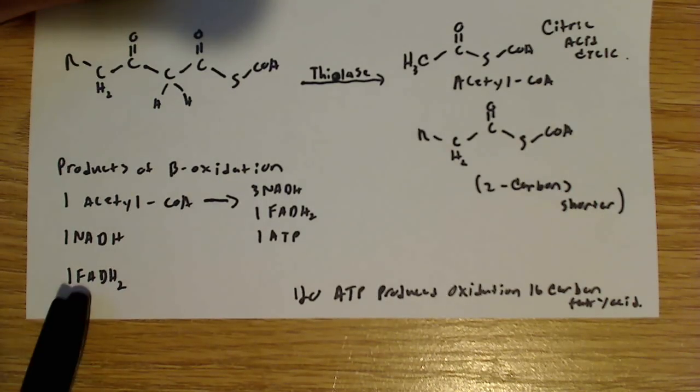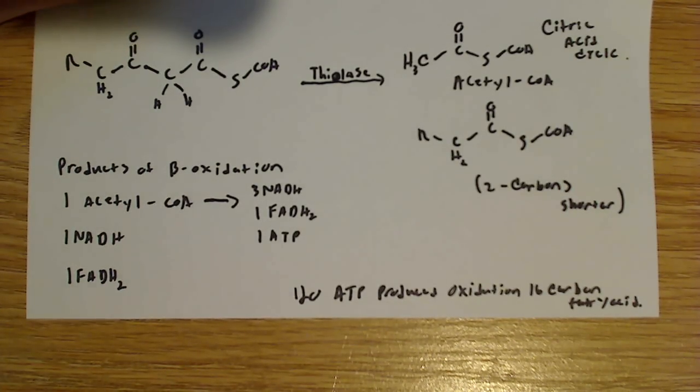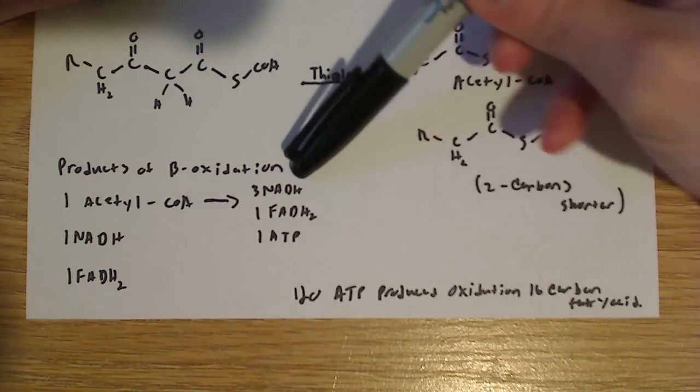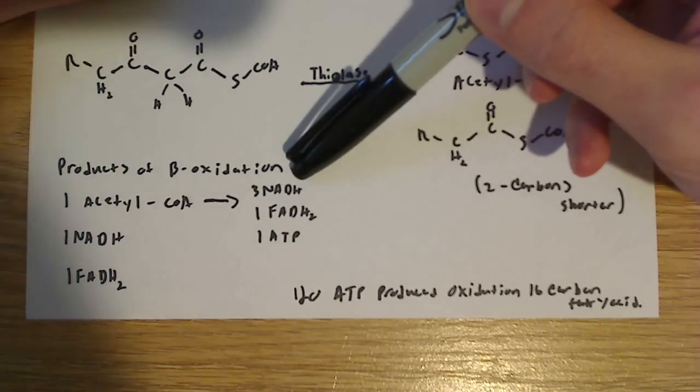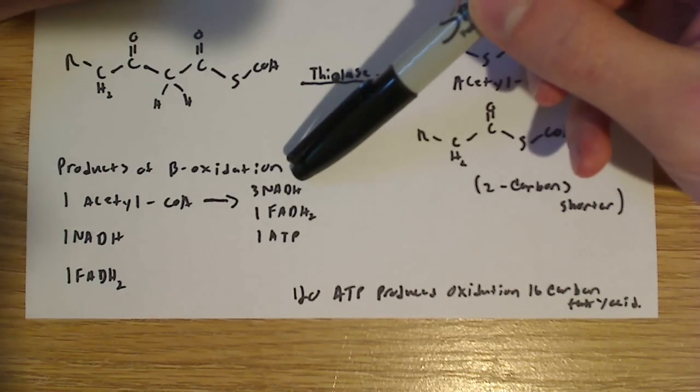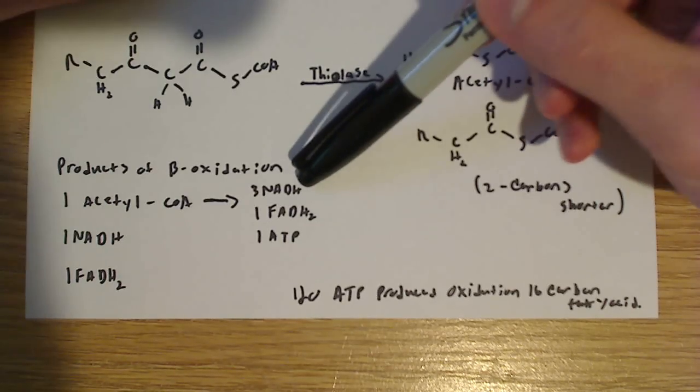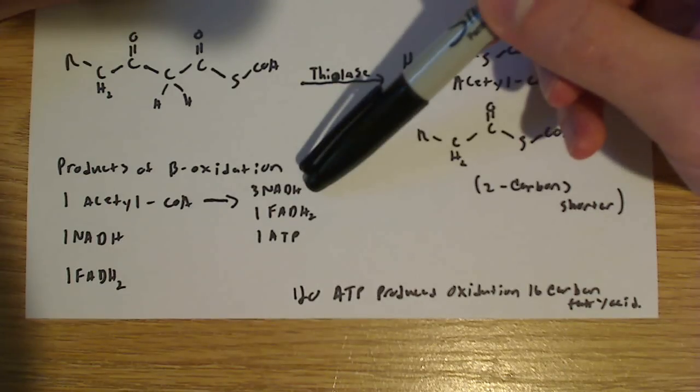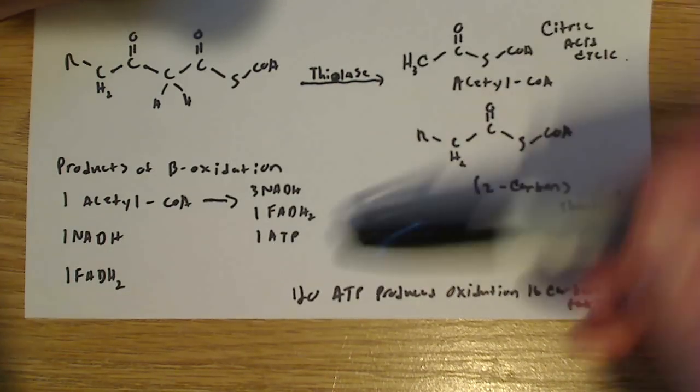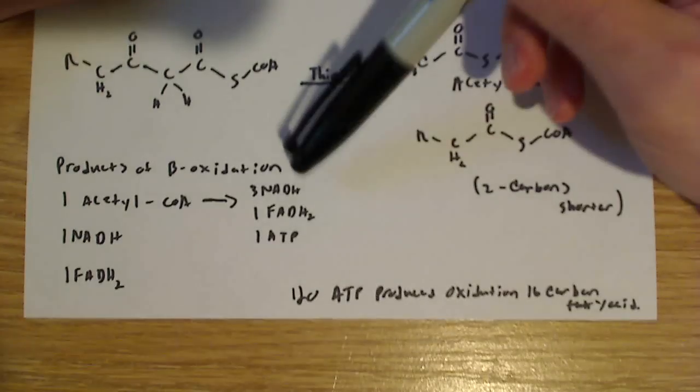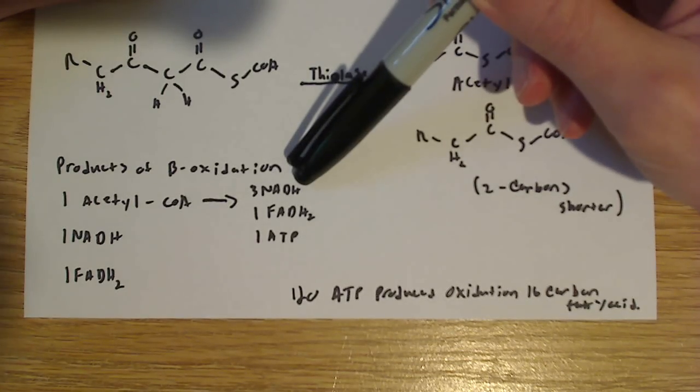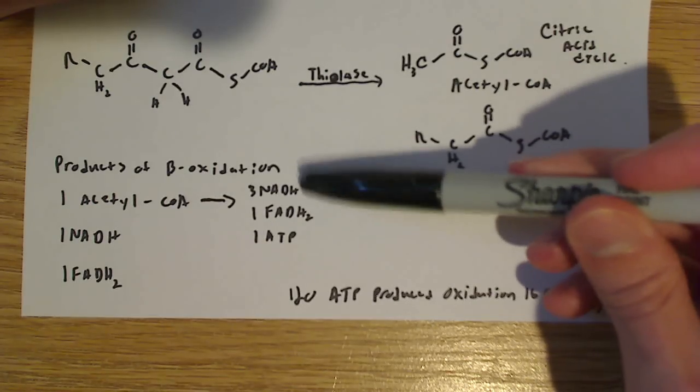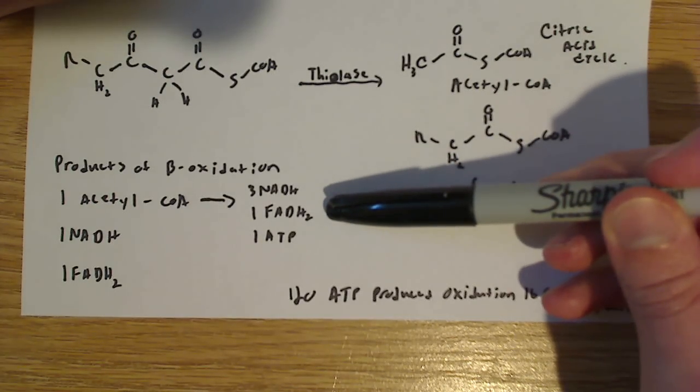And remember, acetyl-CoA, when it goes into and enters the citric acid cycle, or Krebs cycle, or tricarboxylic acid cycle, or whatever you want to call it, it's going to produce three NADHs, one FADH2, and one ATP. And remember I said, the NADHs are like two ATP, each one accounts for about three ATPs, rather, and each one of the FADH2s count for about two ATPs.